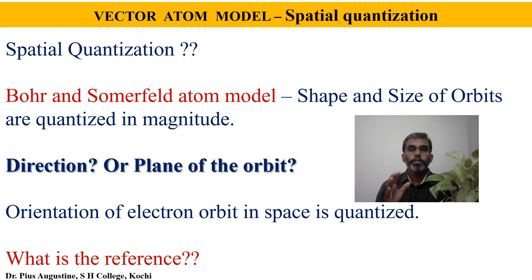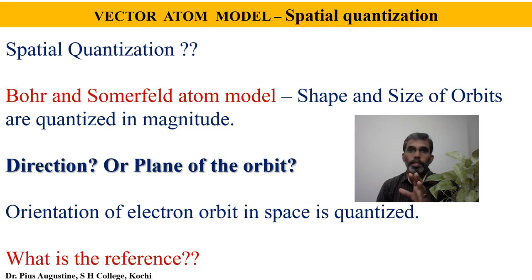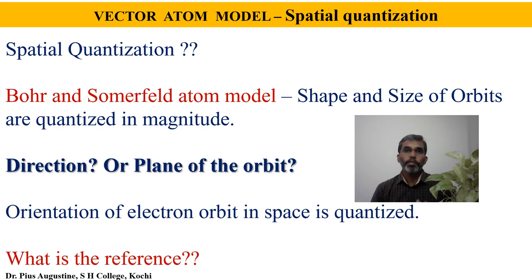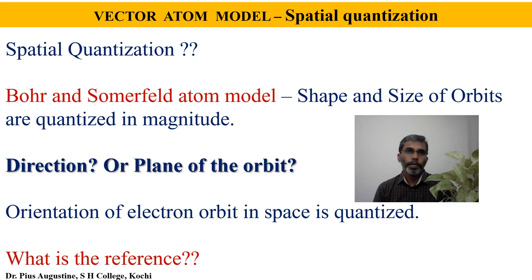First we will analyze spatial quantization. According to Bohr's theory, the orbits are quantized as regards their magnitude — that is, their size and shape are quantized. We have calculated the radius of the nth orbit of hydrogen atom, which tells us the size of the orbit and how it varies with n, along with energy of the electron in various orbits, as we saw in the previous class.